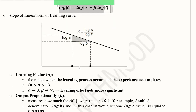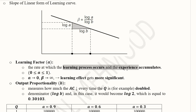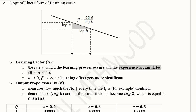The learning factor 'a' is a factor by which the learning effect will take place, accumulating as experience grows. Its value remains between 0 and 1. As the value of 'a' approaches 0, the value of beta approaches infinity — in other words, the learning effect becomes more and more significant.